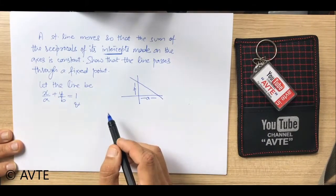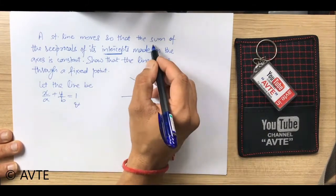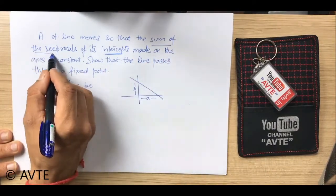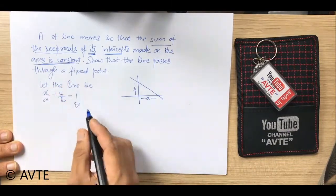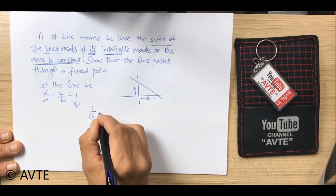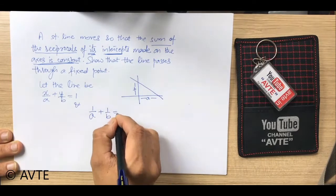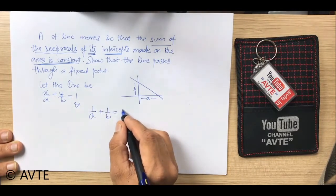And the second important information here is the sum of the reciprocals of its intercepts on the axes is a constant. That is 1/a + 1/b is a constant. So I'm taking that constant as say lambda.